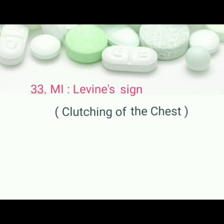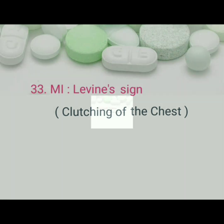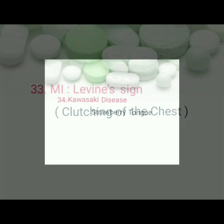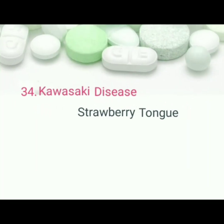MI, myocardial infarction: pathognomonic sign is clutching of the chest. Kawasaki disease: pathognomonic sign is strawberry tongue.